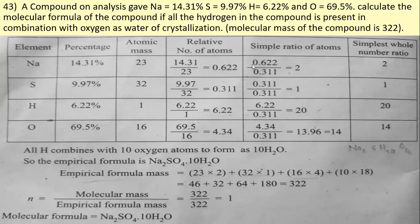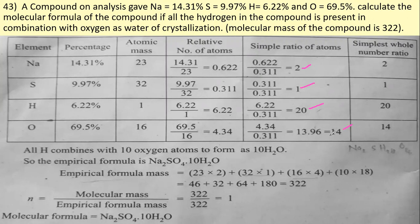After calculating relative atom numbers, we convert to the simplest ratio by dividing by the least value, which is 0.3. Dividing all values by 0.3, we get: sodium = 2, sulfur = 1, hydrogen = 20, oxygen = 14. So the simplest whole number ratio is 2:1:20:14.